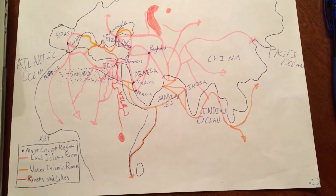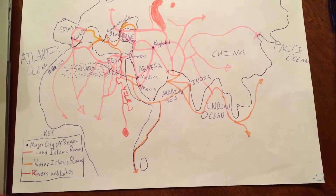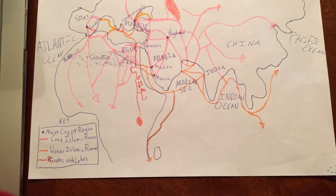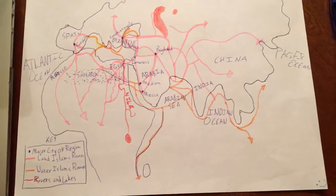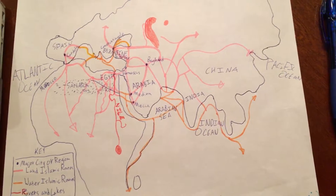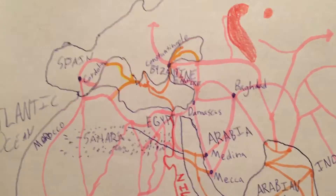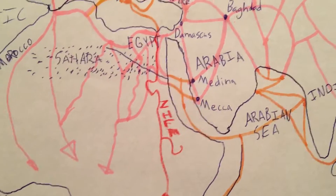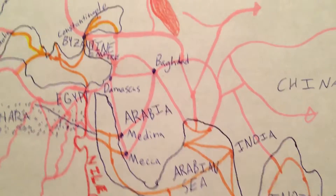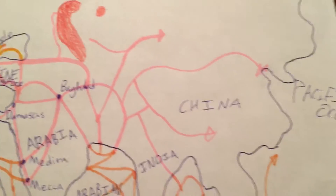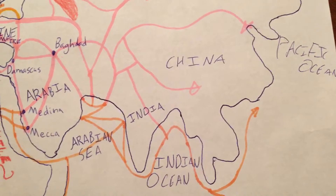I'm Kenny Kimbrough and this is my project on Islamic trade routes in the 8th century BCE. I made the map about where all the trade routes go and they start all the way from Spain, they go down into Africa, they go all through Arabia and the Byzantine Empire and then over into China and India.